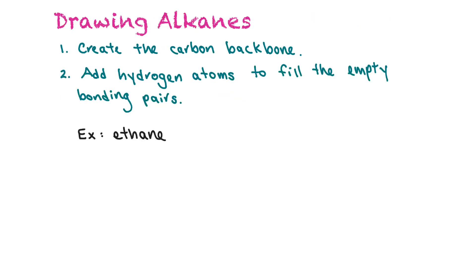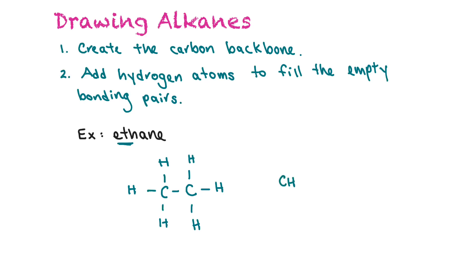Now if we were asked to draw an alkane, you would first create the carbon backbone, then add hydrogen atoms to fill the empty bonding pairs. In this example we have ethane — eth is for two, so there are two carbons. Carbon can make four bonds, so we add the remaining bonding pairs and draw the hydrogens. In condensed format that would be CH3-CH3. End carbons always have three hydrogens, and middle carbons in an alkane are CH2.